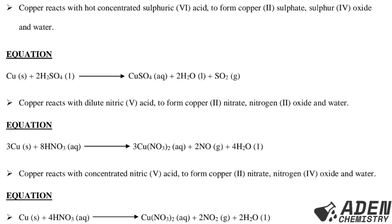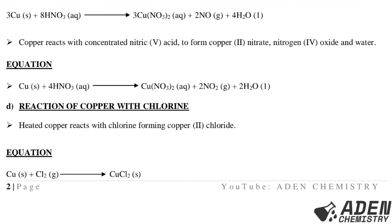Copper reacts with concentrated nitric acid to form copper(II) nitrate, nitrogen dioxide, and water. The equation: Cu(s) + 4HNO₃(conc., l) → Cu(NO₃)₂(aq) + 2NO₂(g) + 2H₂O(l). Next, part D — reaction of copper with chlorine: when heated, copper reacts with chlorine forming copper(II) chloride. The equation: Cu(s) + Cl₂(g) → CuCl₂(s).